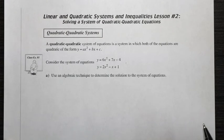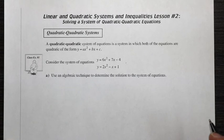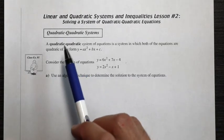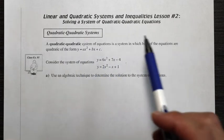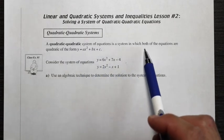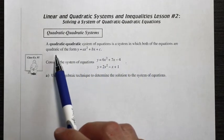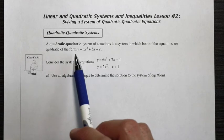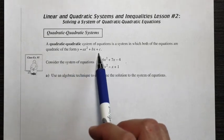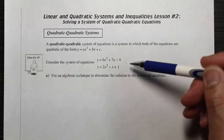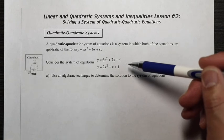We're talking about linear and quadratic systems and inequalities, lesson number two. We're going to solve a system of quadratic-quadratic equations. When we're talking about a quadratic-quadratic system of equations, we're talking about a system in which both equations are quadratic of the form y equals ax squared plus bx plus c. So consider the equations we have here.